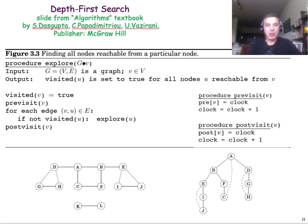If you want to explore a graph G, starting from a node V, you need to have, first of all, a flag for every node. Initially, this flag is set to false, and this flag represents whether you have visited that node before or not.